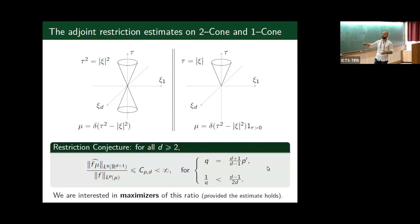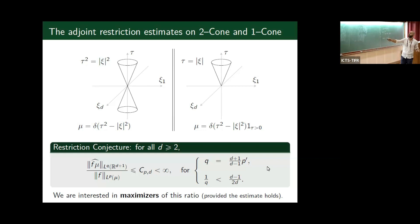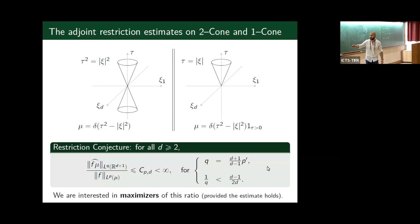It's not exactly the surface measure on the cone, but it's the most natural measure, and this is really the measure we need. The cone is tied to the wave equation, which is Lorentz invariant, so we want to preserve this Lorentz invariance. We have a surface, a measure on it, and we can consider the extension operator — which is the adjoint of the restriction operator. This is why it's called the restriction conjecture. It is conjectured that this inequality holds in this range of exponents.